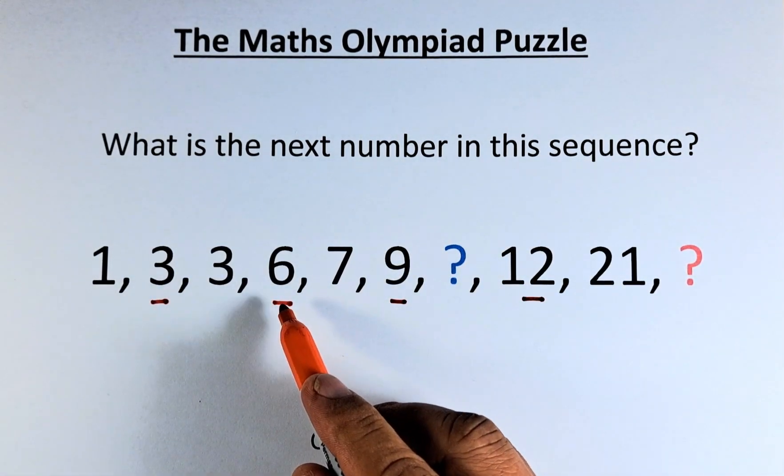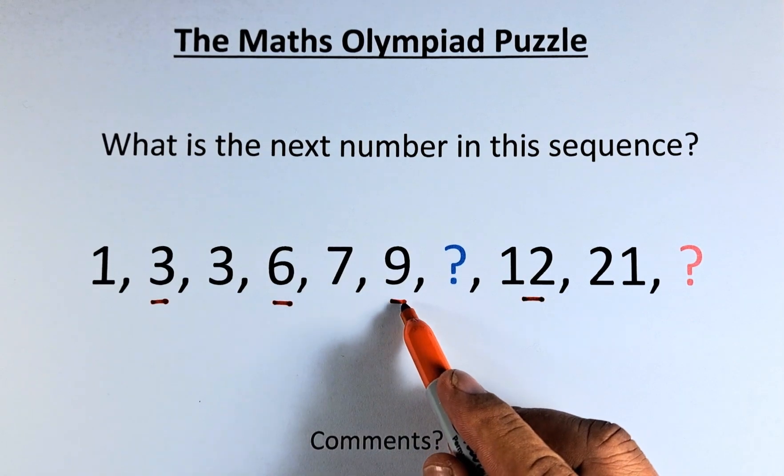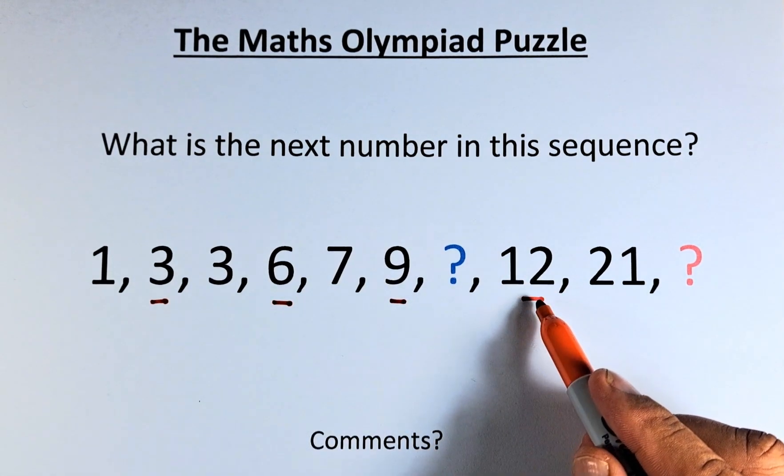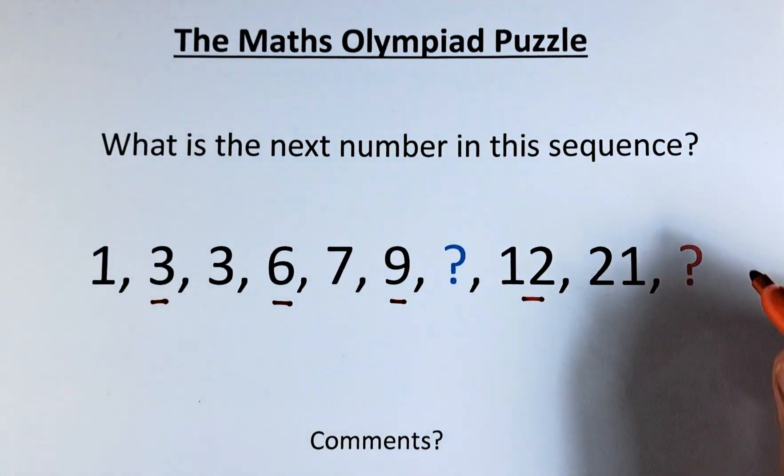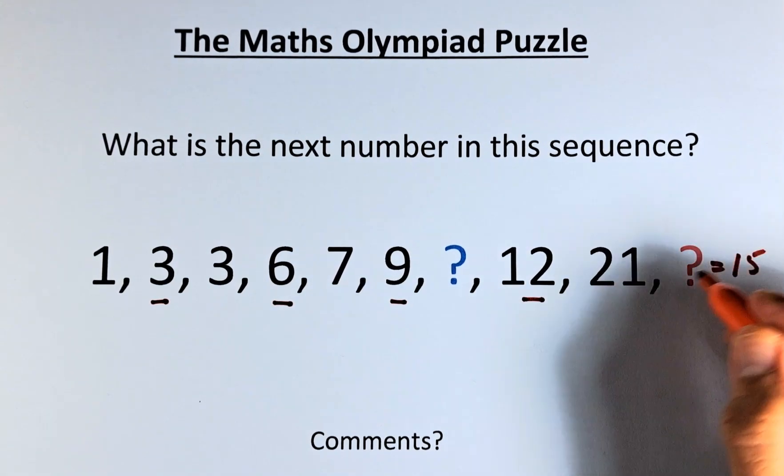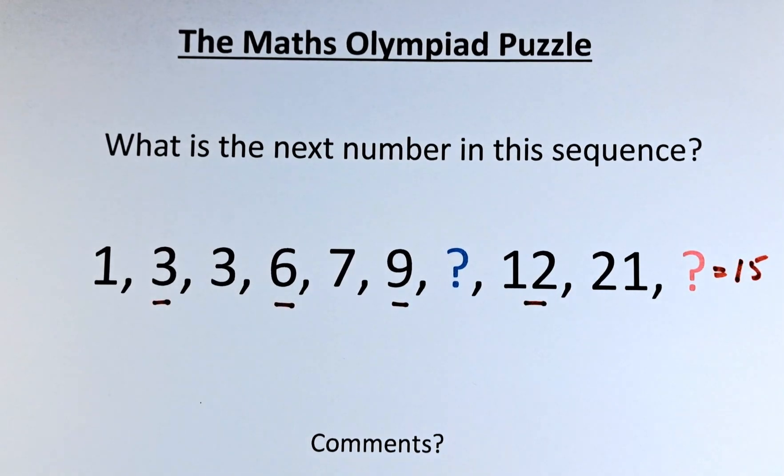3 to 6 is plus 3. 6 plus 3 is going to be 9. 9 plus 3 will give you 12. And of course, the first question mark is going to be 15 because 12 plus 3 is going to give you 15. So the red question mark is equal to 15.